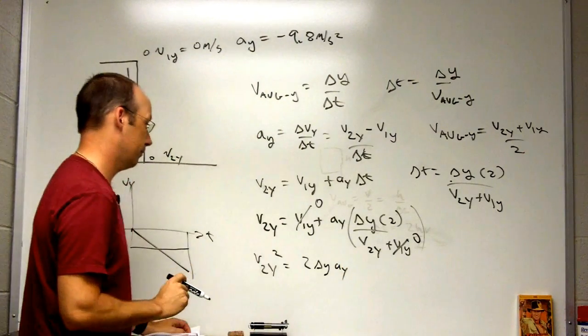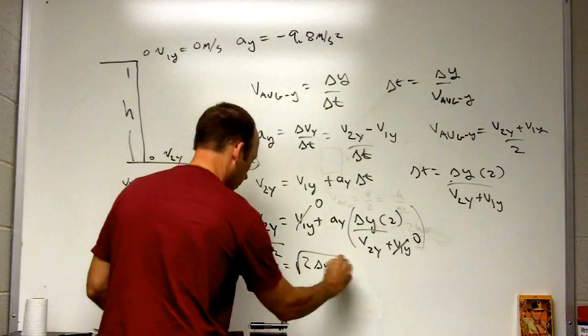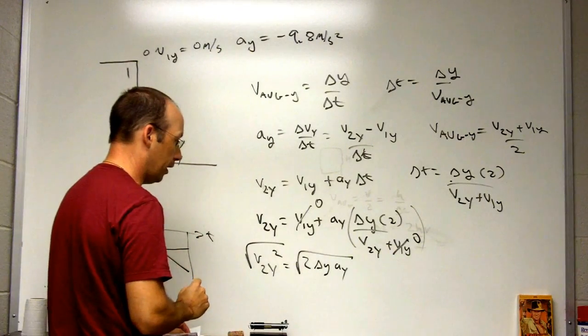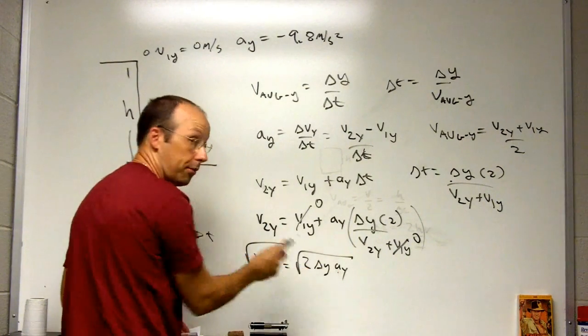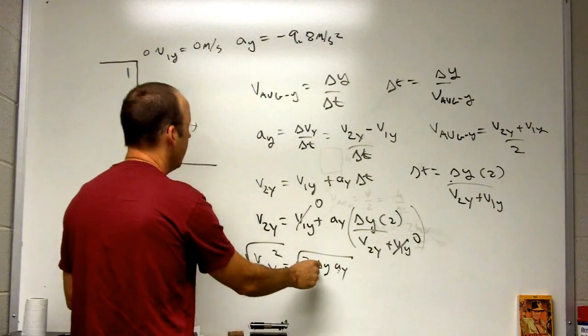And then I just take the square root of both sides and I get the final velocity. Now, here I'm dealing with scalars, so the sign does matter. ay is a negative value and delta y is what?